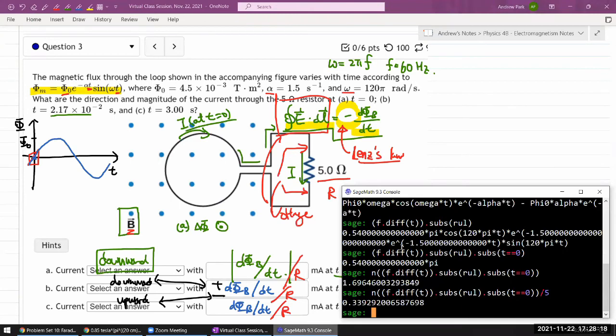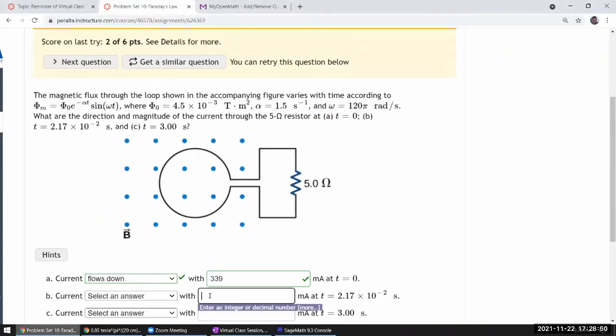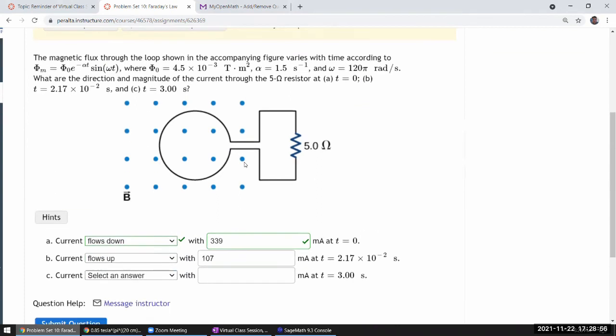Might as well do it here. So I'm plugging in the time that I'm plugging in is 2.17 times 10 to the power of minus 2. I get a negative sign. So it must be somewhere along this cycle here in the downward slope. So the magnitude is 0.107 or 107 milliampere. And the direction of current will now be flipped. It will flow up instead of down. Good.